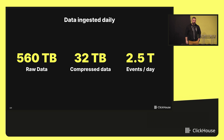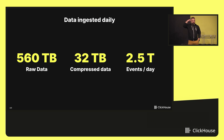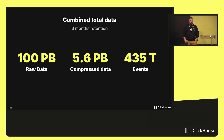What about the scale of LogHouse? Right now we ingest about 560 terabytes of raw telemetry data every day. Thanks to ClickHouse's compression, we shrink it down to around 32 terabytes of data per day in storage — that's roughly 18x compression. The number of events is staggering: we do about 2.5 trillion events per day. For the full retention period of 180 days (six months), we have about 100 petabytes of raw data, compressed down to roughly 5.5 petabytes in the object store. We have over 400 trillion events in LogHouse at the moment.